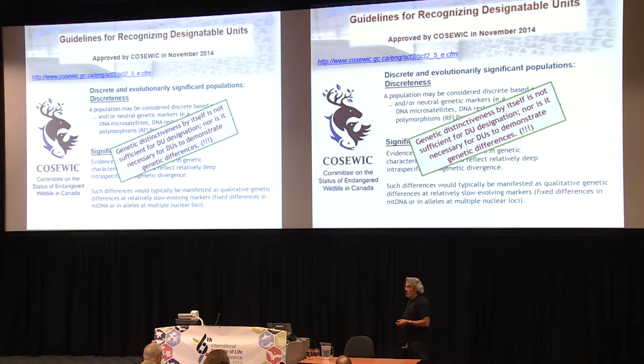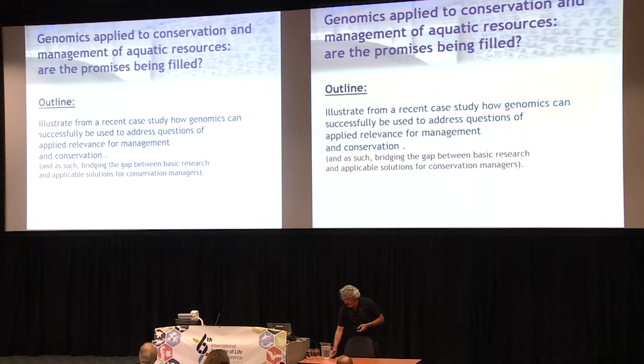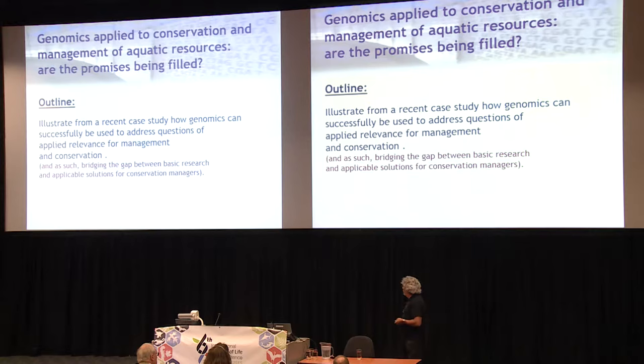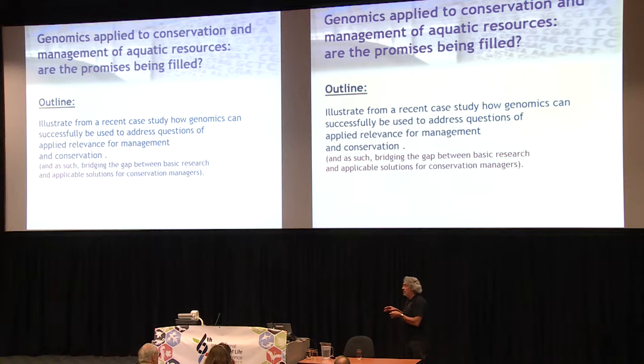So the outline of my talk is very simple. It's basically just to dissect one case study that I've been involved in, to illustrate how genomics can actually be successfully used to address questions of applied relevance for management and conservation, bridging the gap between basic research and applicable solutions for conservation managers. I want to save some time to tell you about something quite different than genomics later on in the talk.